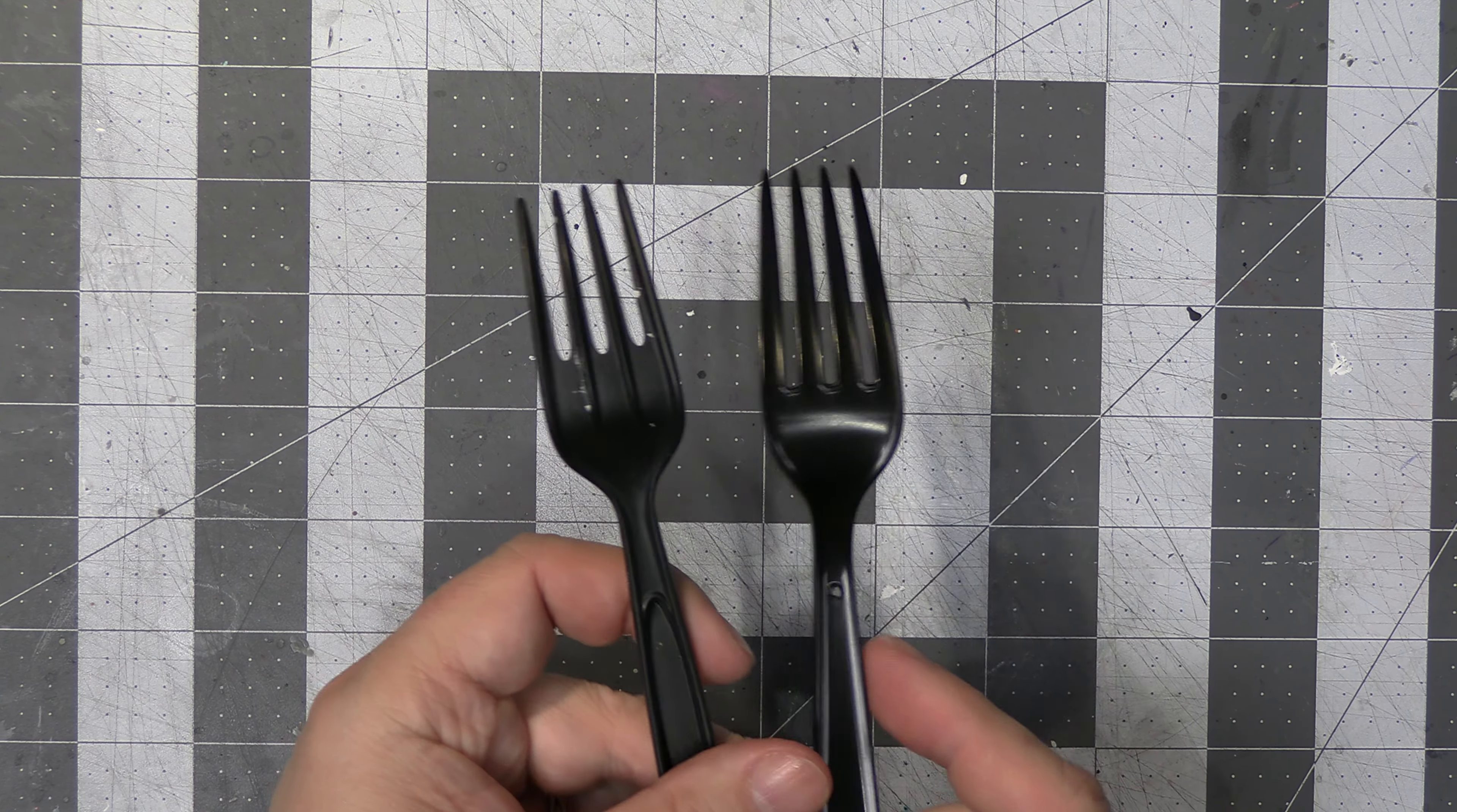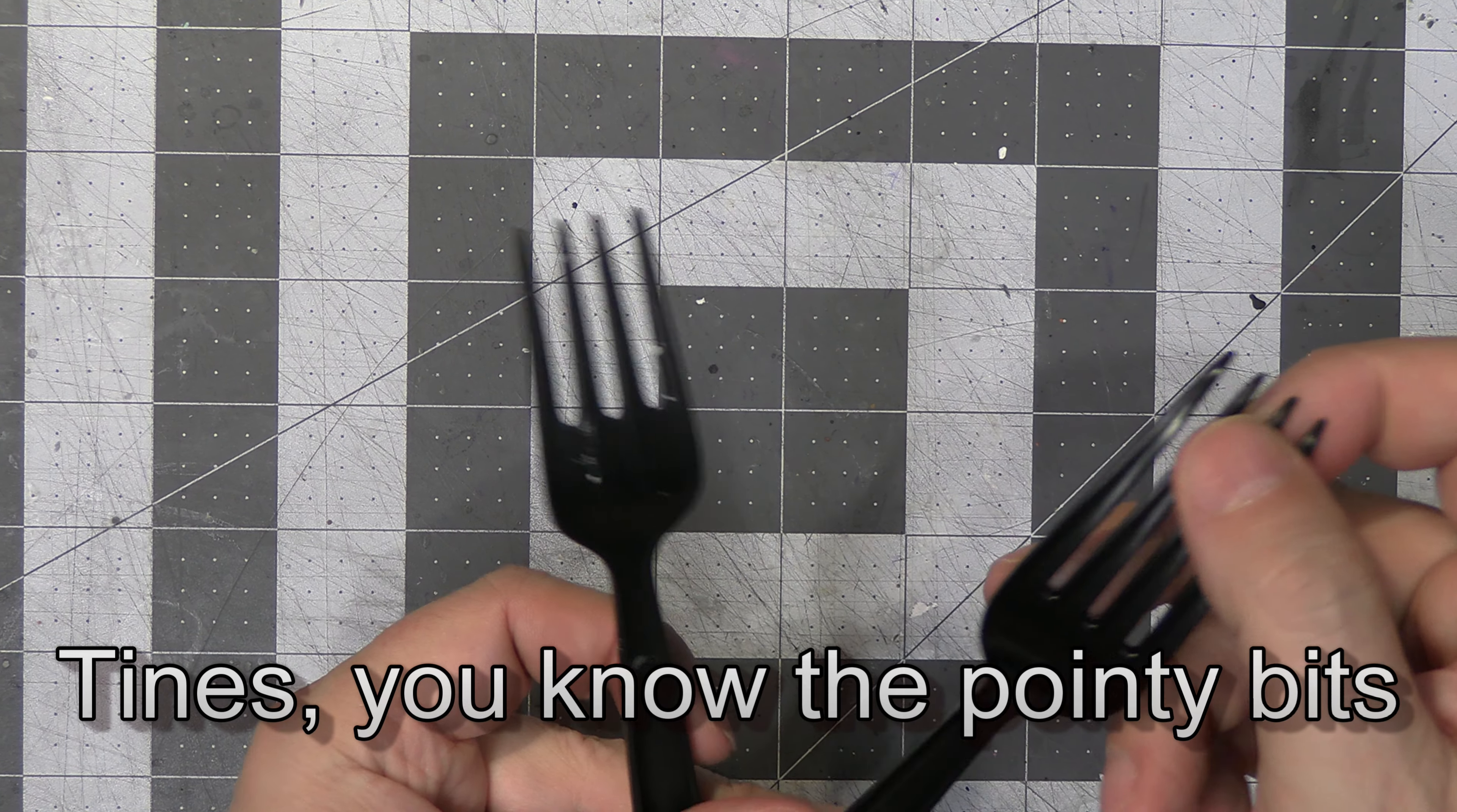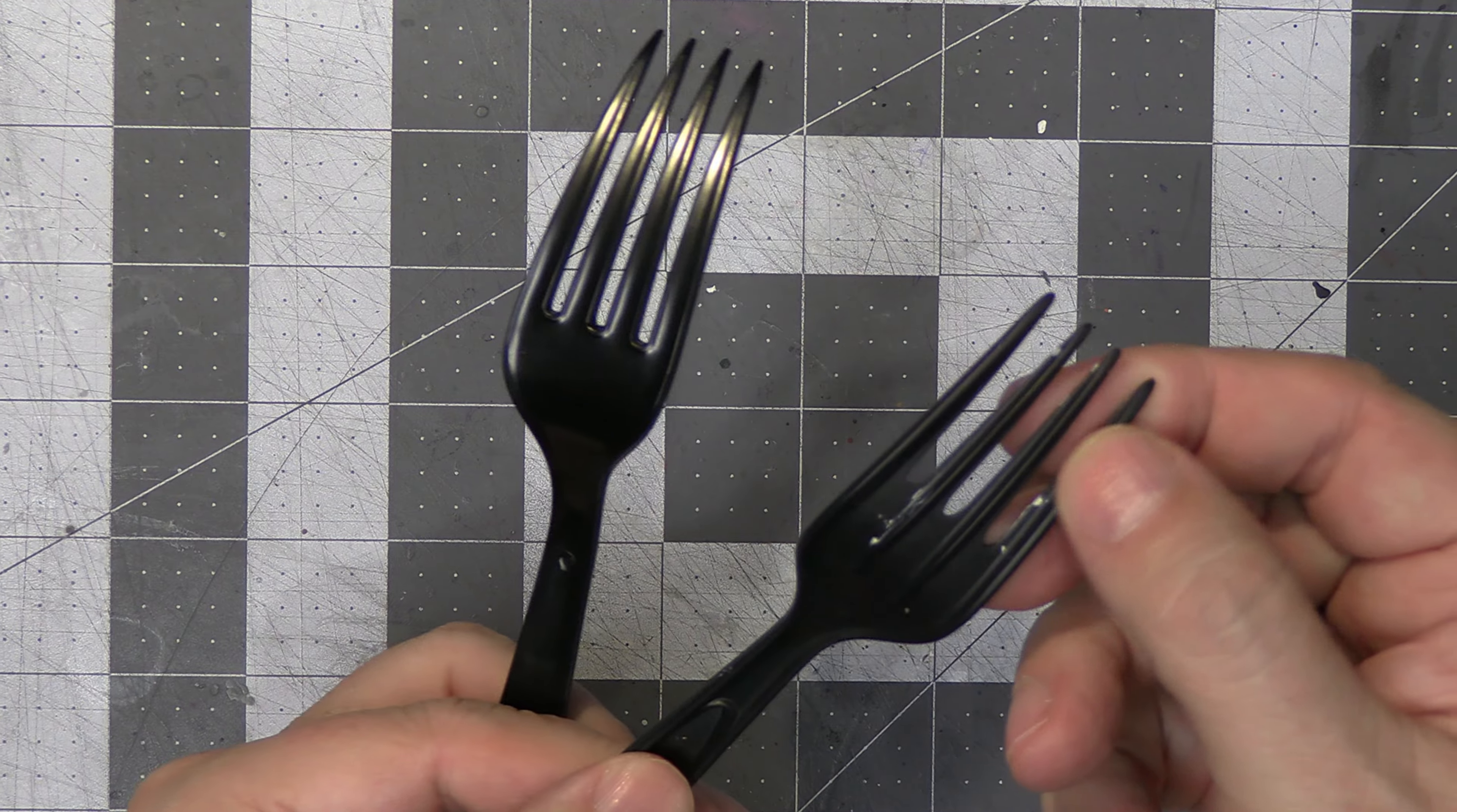Now let's turn them over and look. You can see here the tines on this one are solid and the tines on this one are not. So I really like to use the solid tines in my crafting.